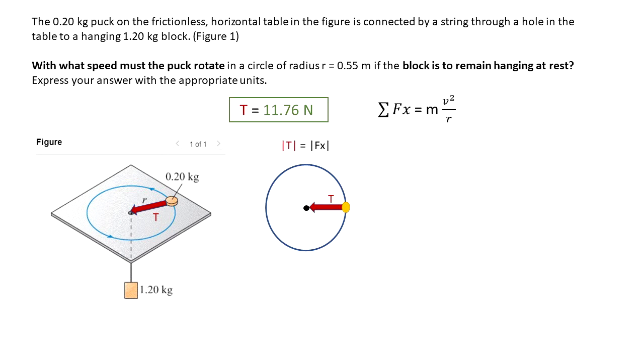You can see that the tension is the centripetal force in this case. So that's why I say the summation of the forces in x, but actually it's going to the center. The summation of the forces is equal to mv squared over r.